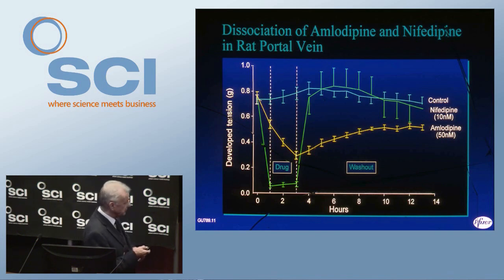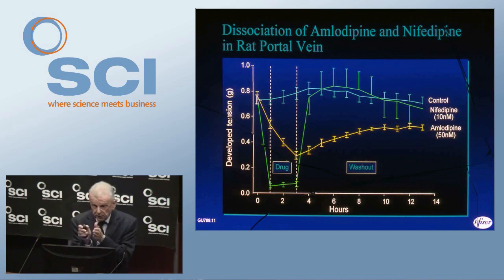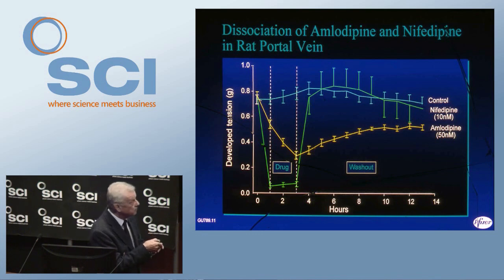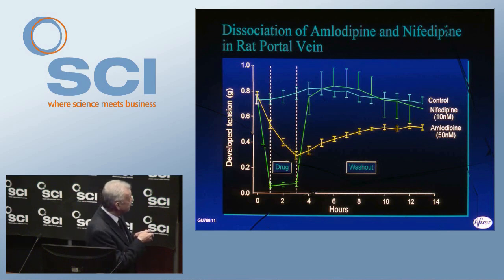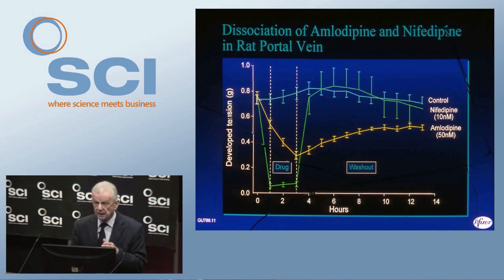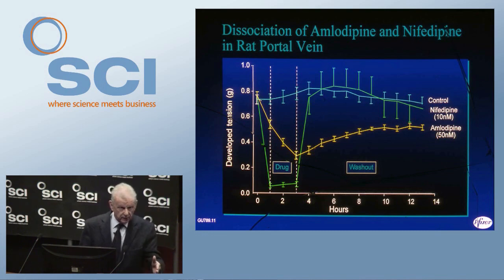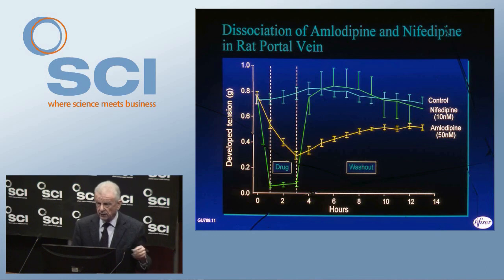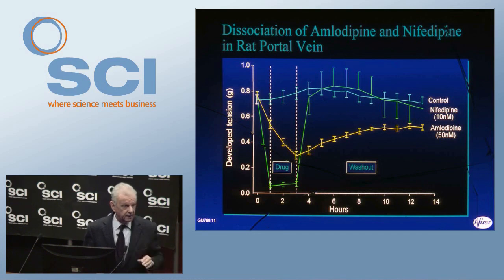Let me show you some pharmacology. This is a very important slide. We take the rat portal vein and contract it — you can see the tension. We then administer the drug. With nifedipine there is a very rapid onset of action, a very short duration, and then a very rapid offset. And that's exactly what you see in the clinic: blood pressure goes down very quickly, there's a short duration, and then it returns. When blood pressure goes down very quickly, you get a tachycardia — an increase in heart rate — you get flushing, and you get a headache.